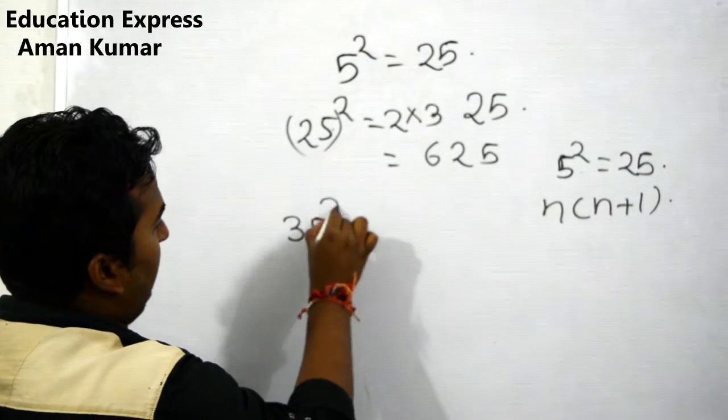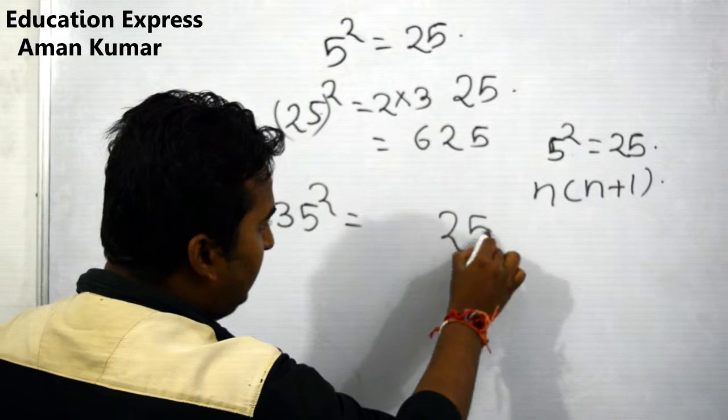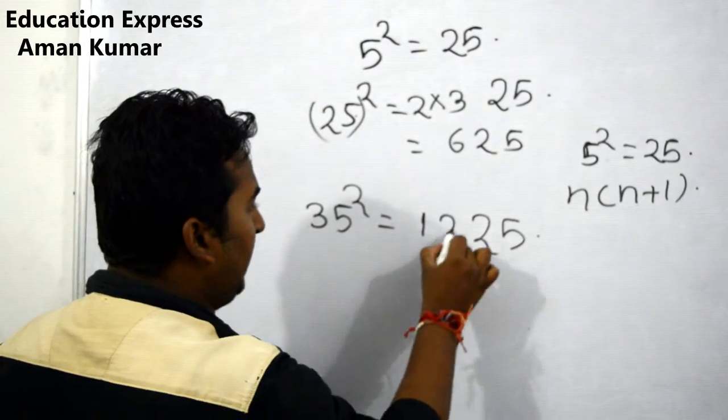Next number is 35 squared. 35 squared means 5 squared is 25, 3 into 4 is 12, giving us 1225.